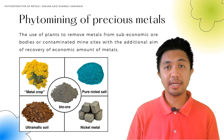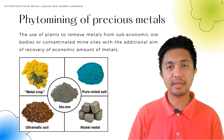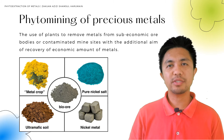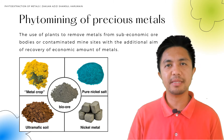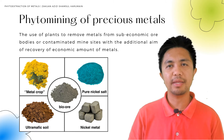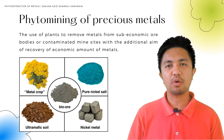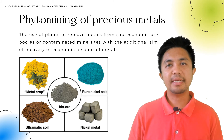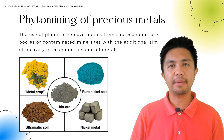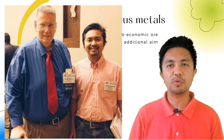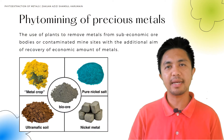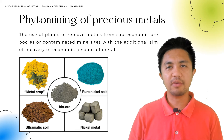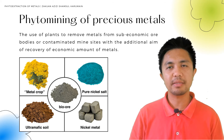Phytomining is an approach whereby specific metals can be extracted and reconcentrated from waste sources such as mine waste, which contain concentrations of precious metals such as gold and palladium that are currently uneconomical to re-extract using conventional methods. The idea of phytomining was first coined by Rufus Chaney as a means of using plants to remove metals from sub-economic ore bodies or contaminated mine sites, with the additional aim of recovering economic amounts of metals.